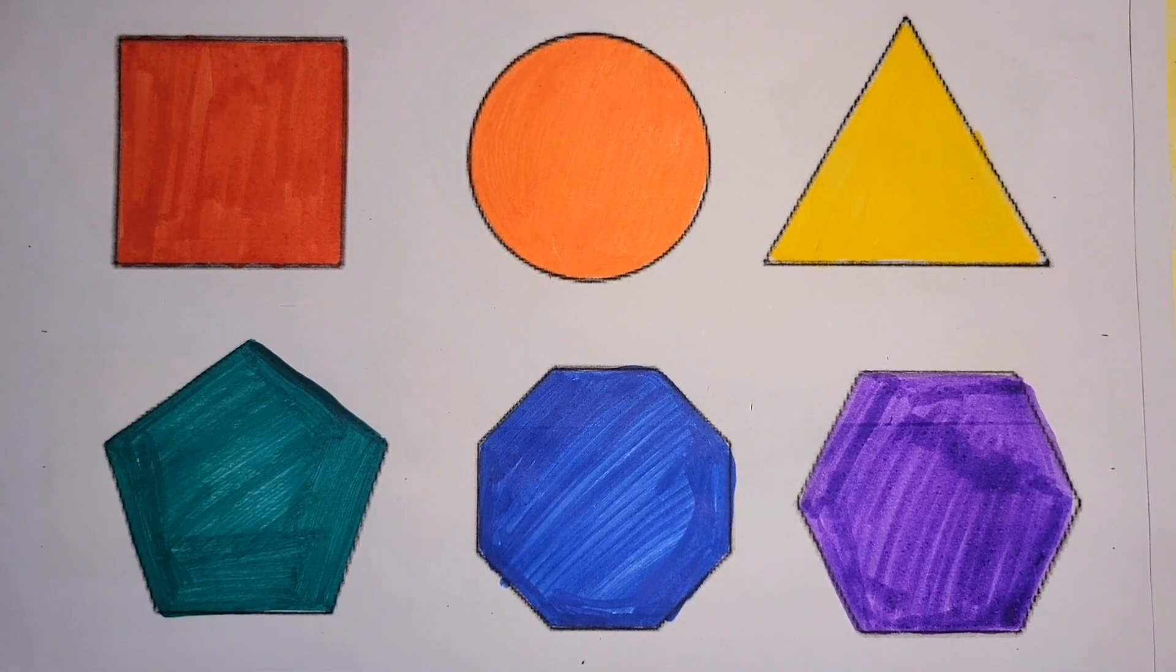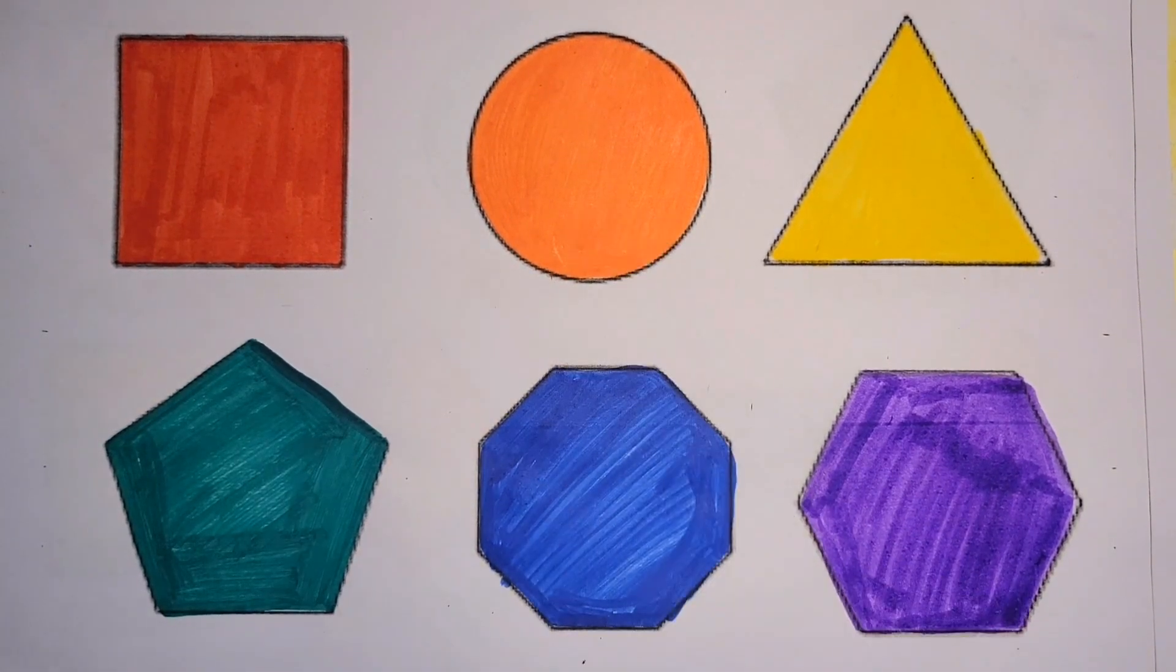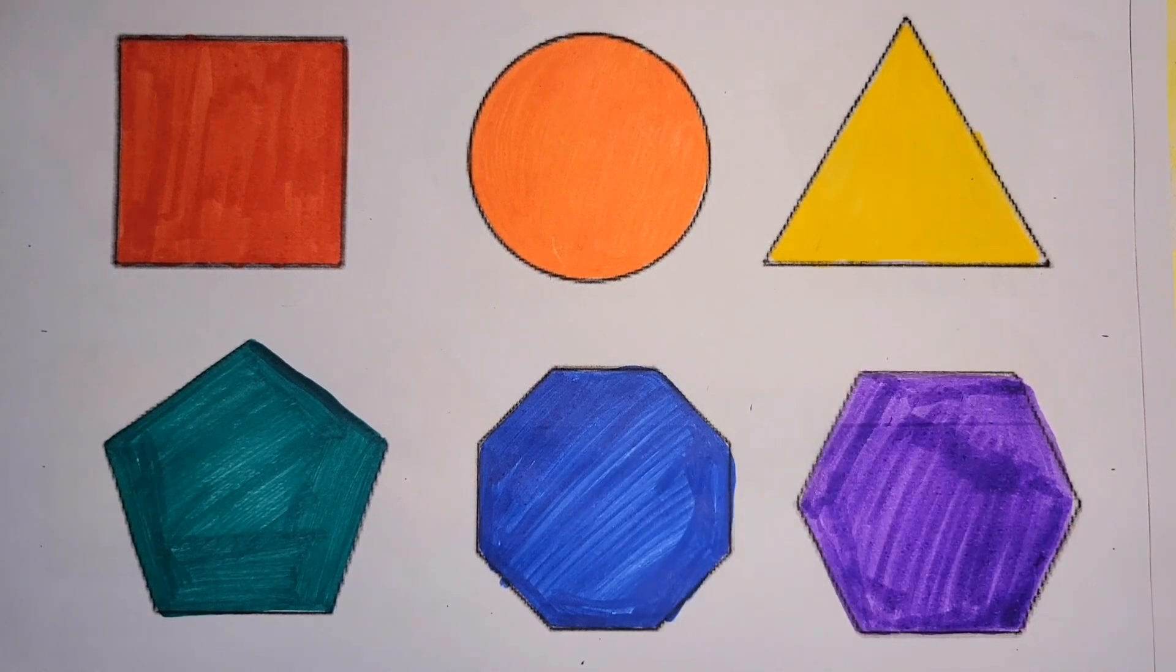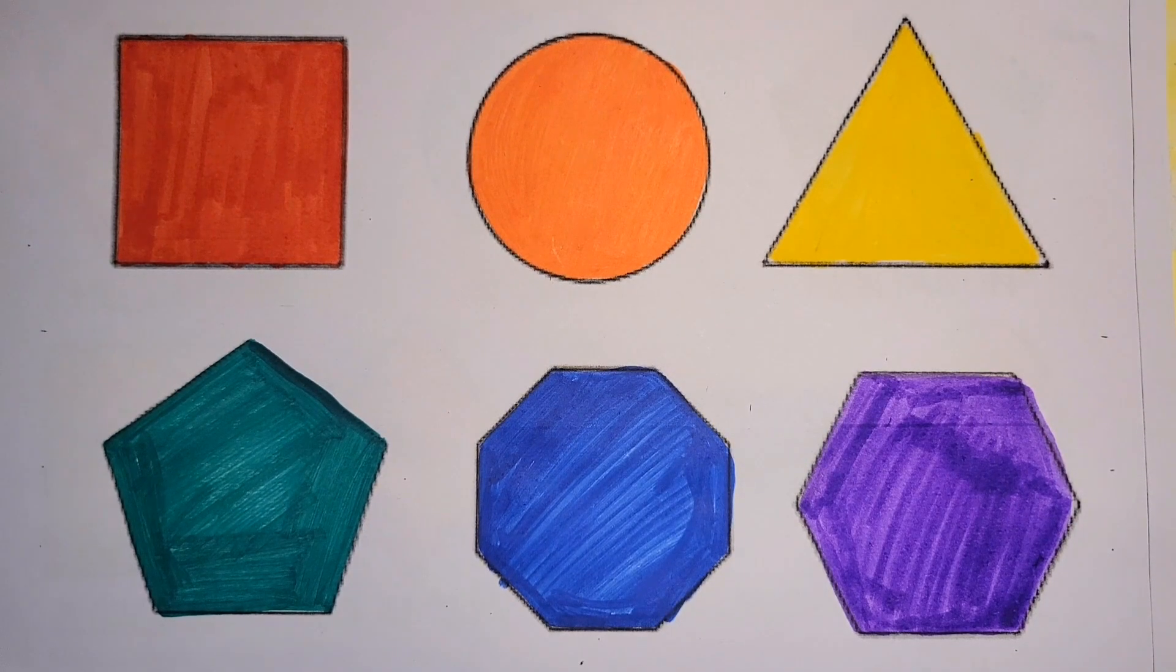Wow! Square red color, circle orange color, triangle yellow color, pentagon green color, octagon blue color, hexagon purple color.